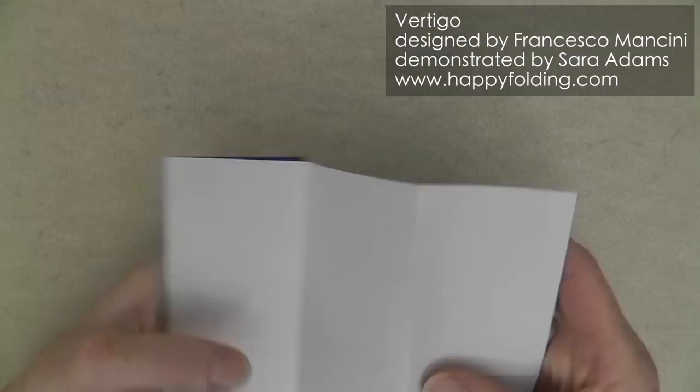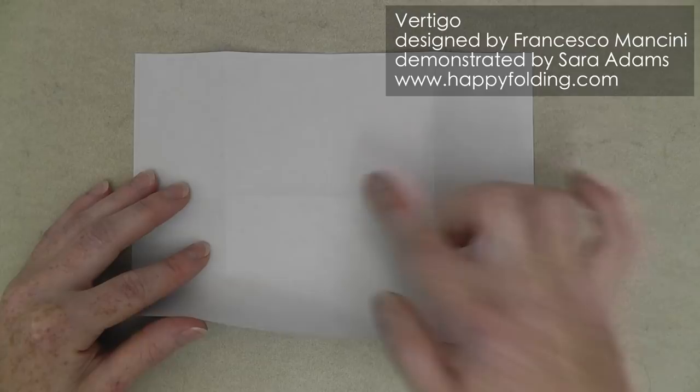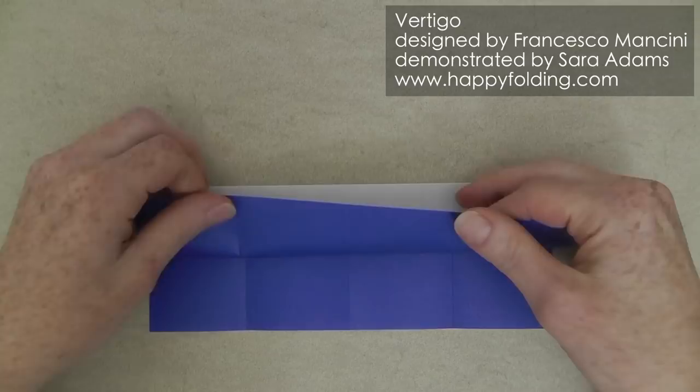Now, with the white side up, we're going to fold the raw edge to the central crease line, and again I'm going to fold this so that it's easier to see where we need to align the paper.